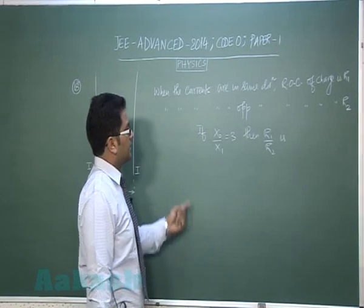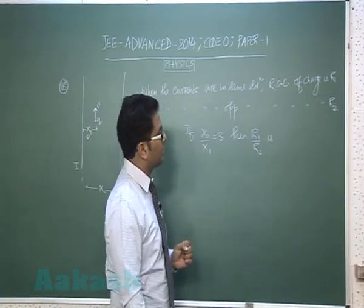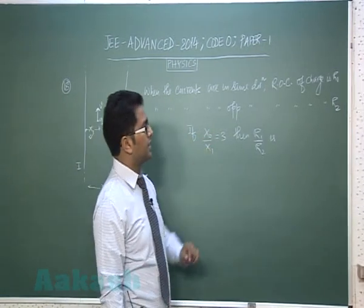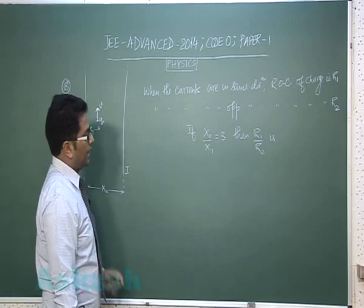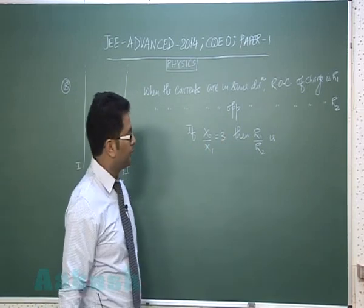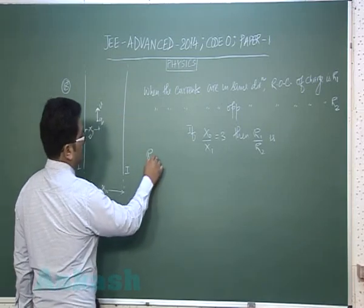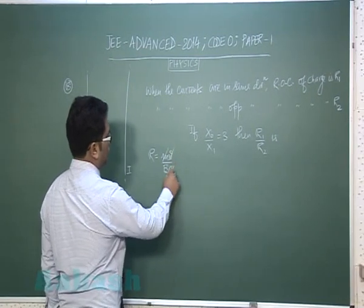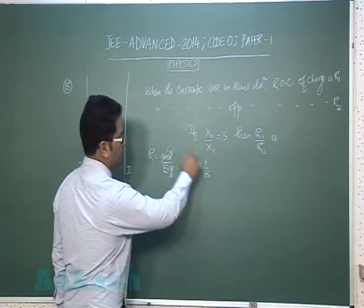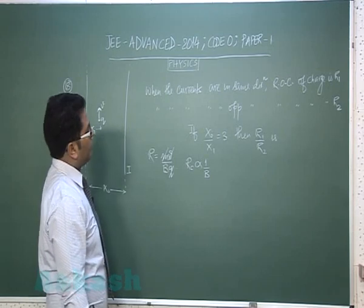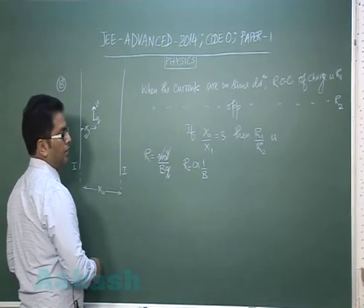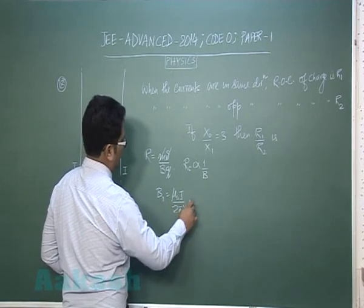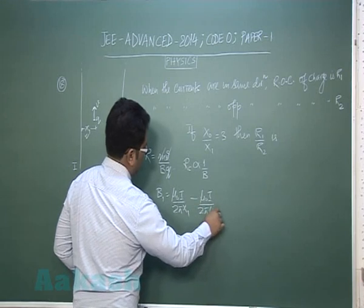The question says when the currents are in same direction radius of curvature is R_1. This will move in the field, and when the currents are in opposite direction radius of curvature is R_2. If x_0 by x_1 is given we need to find R_1 by R_2. Clearly the radius of a charge is mv by Bq, so you could see that mass same, V same, Q same - the radius of curvature is inversely proportional to B. When the currents are in the same direction the magnetic field B_1 would be μ₀I/2πx₁ minus μ₀I/2π(x₀-x₁) because when the currents are in the same direction the field would be subtracted.